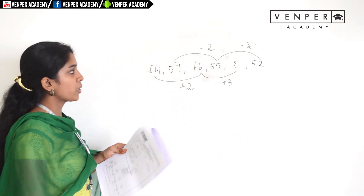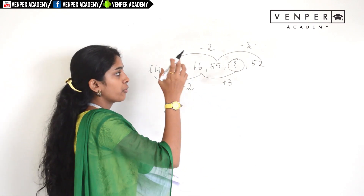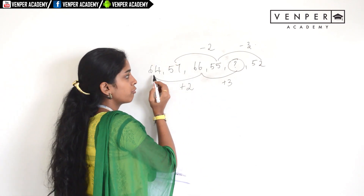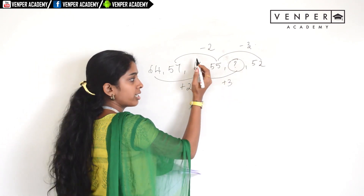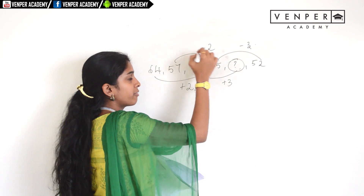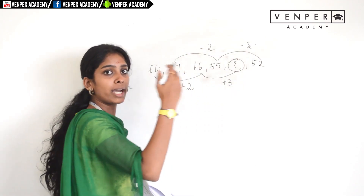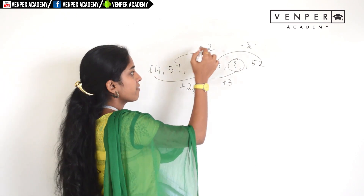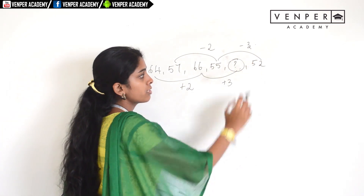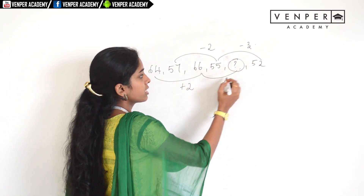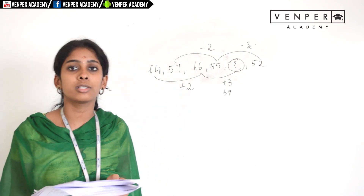Question twenty-two: find the number that replaces the question mark. All alternate numbers in even positions decrease by two and then by three alternately: 57−2=55, 55−3=52. In the other positions they increase: 66+3=69. So the answer is 69, the second option.